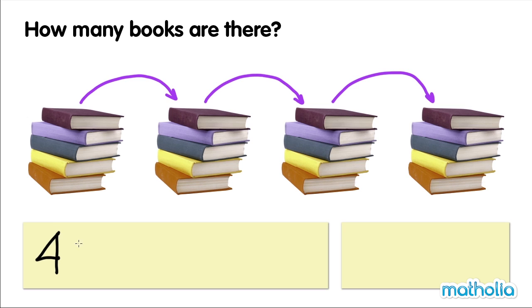Four fives equals twenty. Four times five equals twenty.